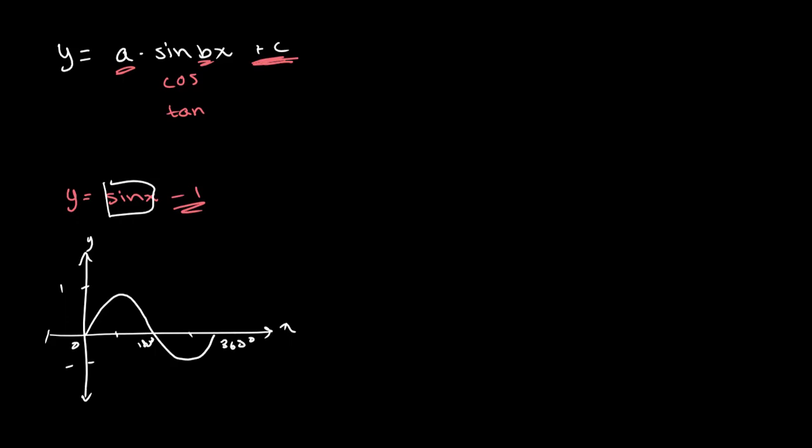Now when we're subtracting 1 from this what we're essentially doing is we're moving every point on our graph 1 lower. So for example over here we have 0, this will become minus 1. Here we have 1, it'll become 0, 0 minus 1, minus 1 will become minus 2 over here.